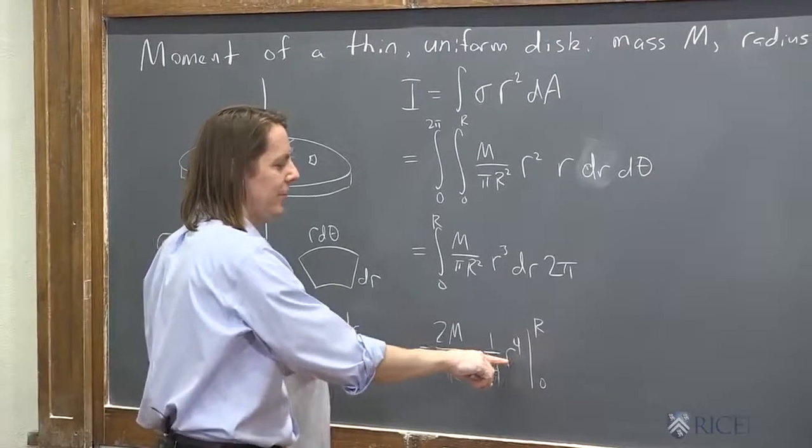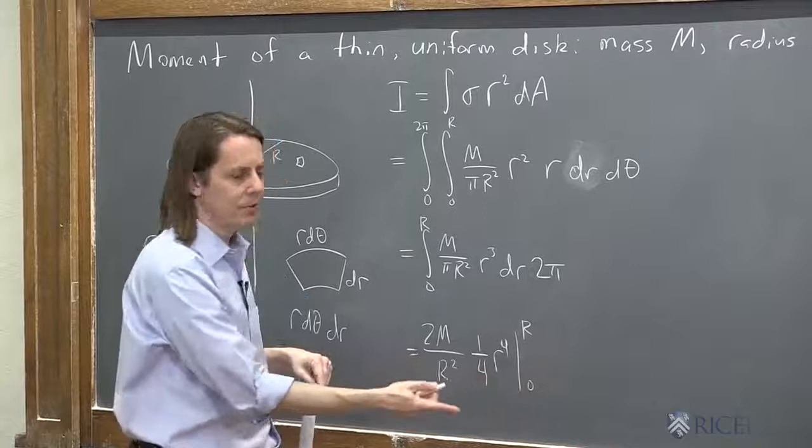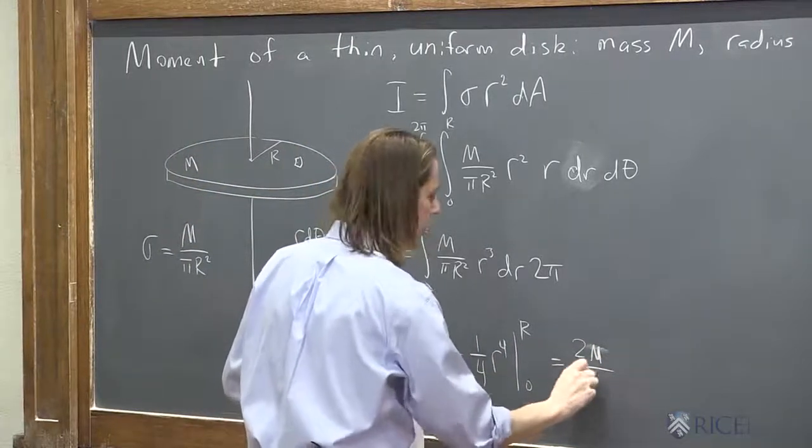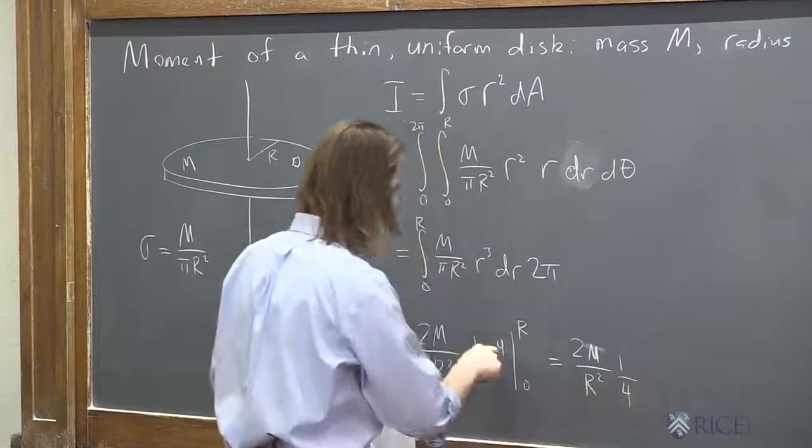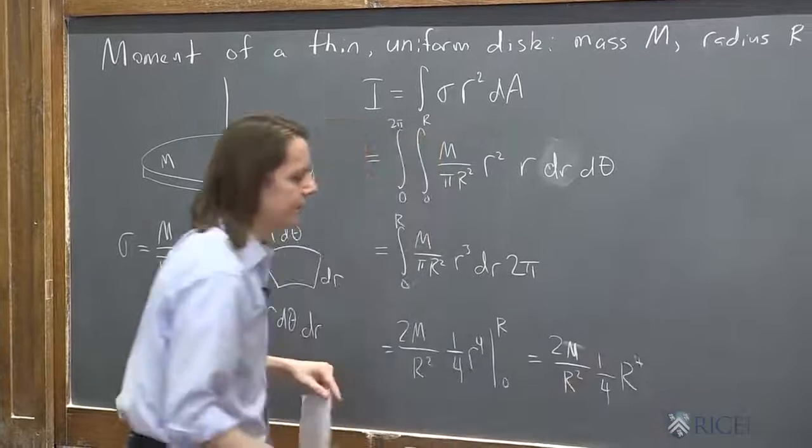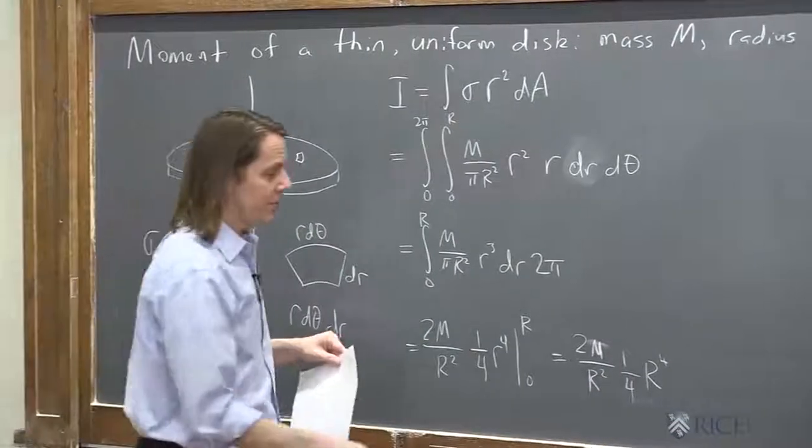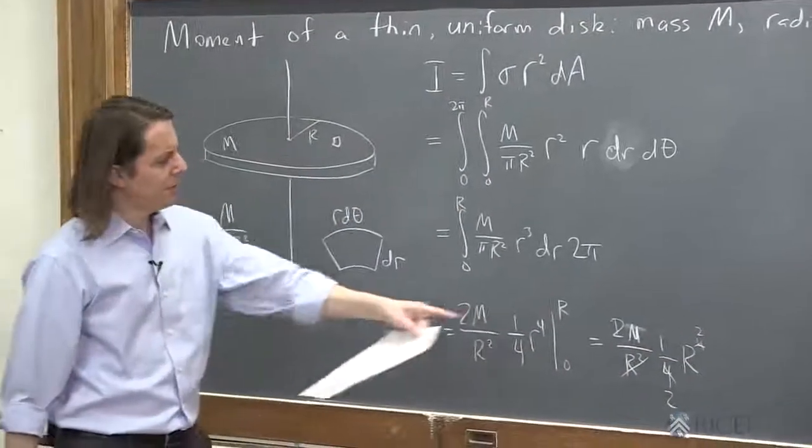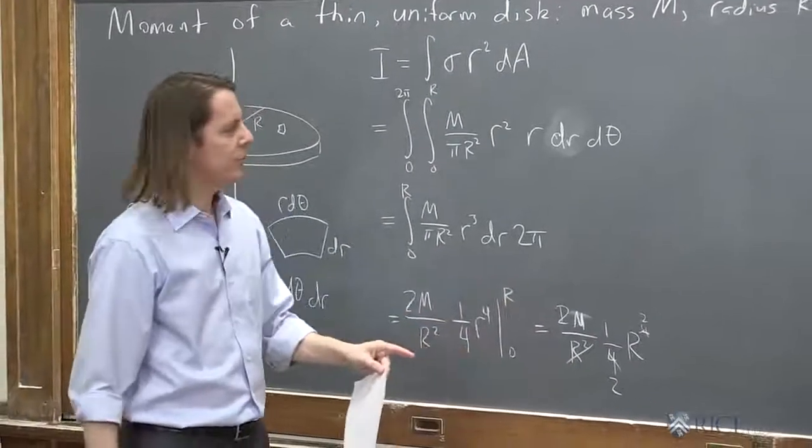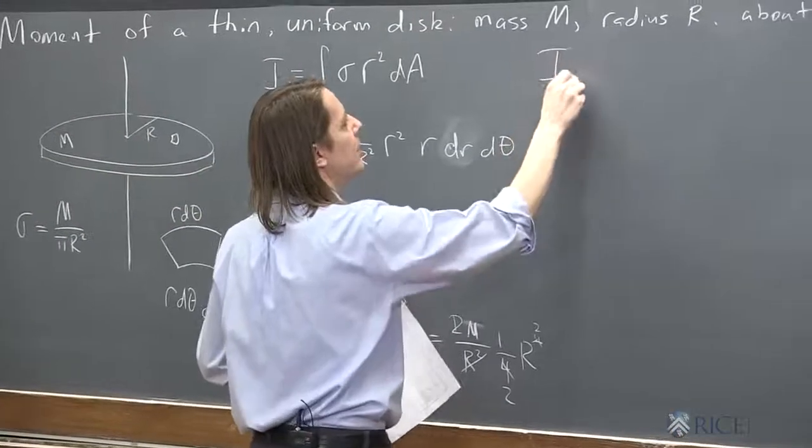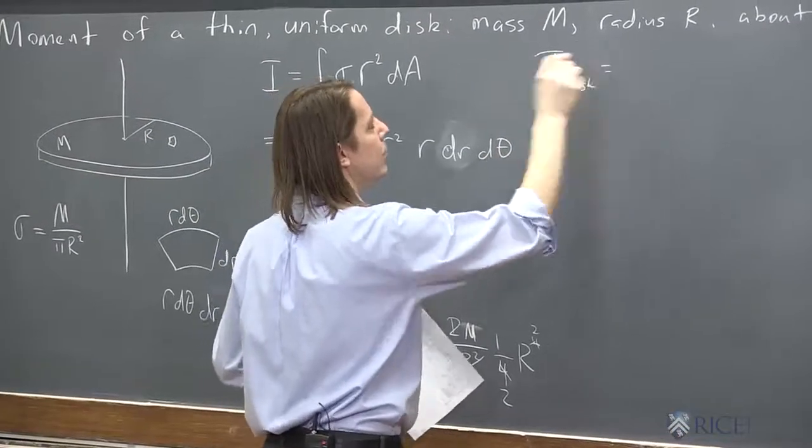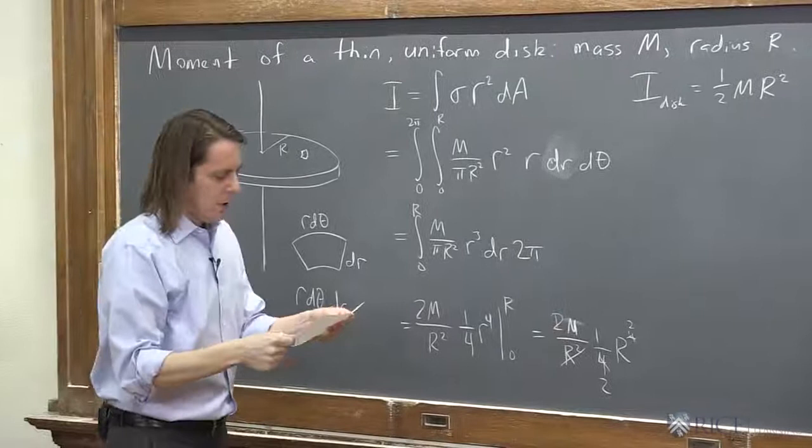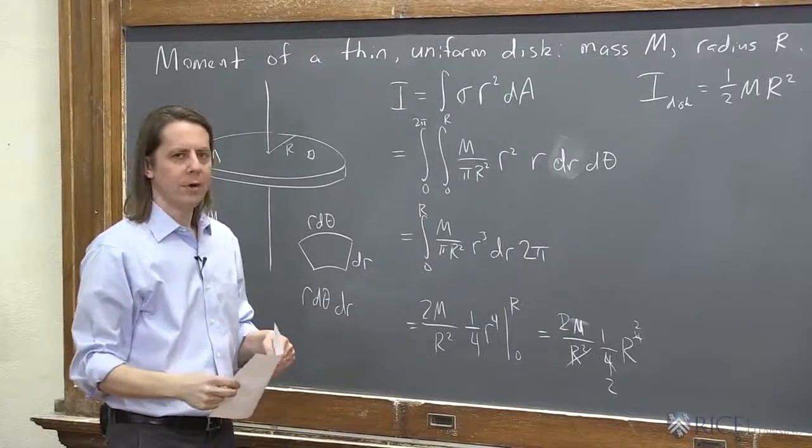So now we evaluate this at big R. So that's big R to the fourth minus 0. So this is 2M over R squared, 1 fourth times big R to the fourth. So now more stuff. We'll cancel this 2 and that 4. It'll become a 2. And then these will go away, and that'll become a 2. And we end up with 1 half MR squared. So I of the disk through that axis is 1 half MR squared. Pretty good. We're done. That's it.